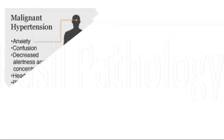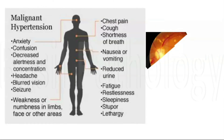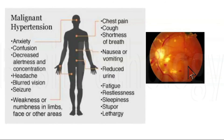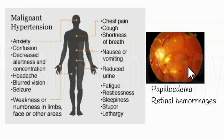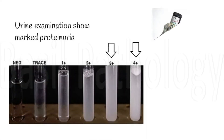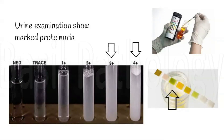The major clinical features of malignant hypertension, apart from renal injury, are altered higher neurological functions like anxiety, confusion, and headache, followed by blurring of vision due to papilloedema and retinal hemorrhages. On urine examination, there is marked reduction in urine volume — oliguria or anuria — and marked proteinuria of 3+ or 4+. Thank you for your patient listening. We will see vascular diseases of the kidney in part 2.